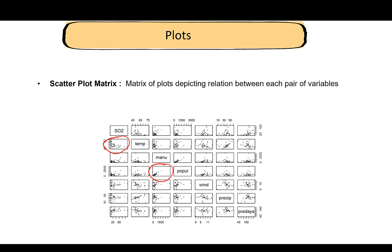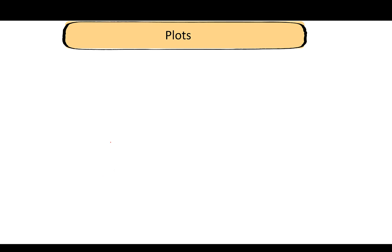It's important to note that in each of these plots in this matrix we're only looking at two variables at a time. This plot of SO2 and temperature has nothing to do with the manufacturing units, population, wind speeds, or any other variable. Even though we have six or seven variables here, each of these individual plots depicts relationship only between two of these variables.